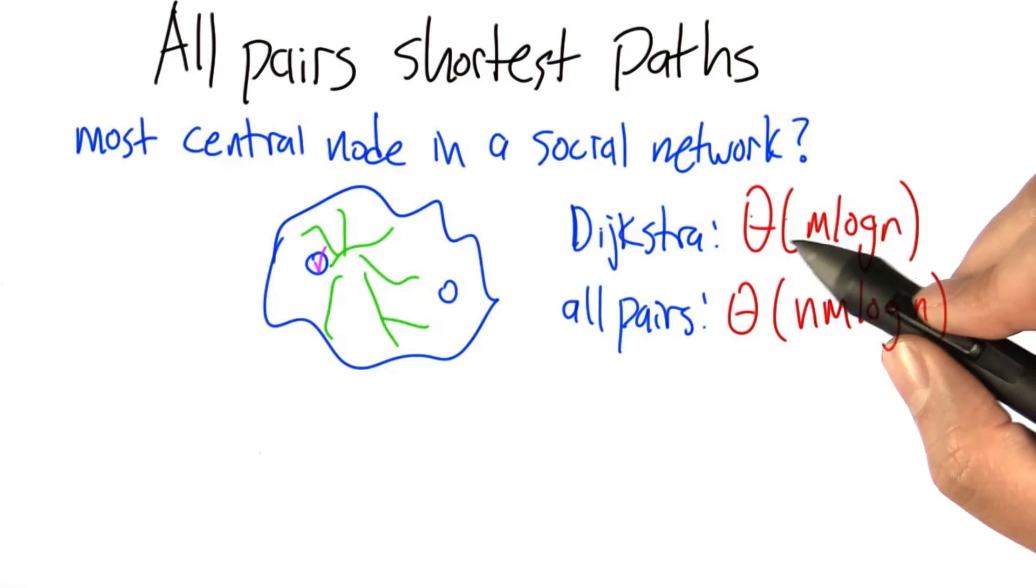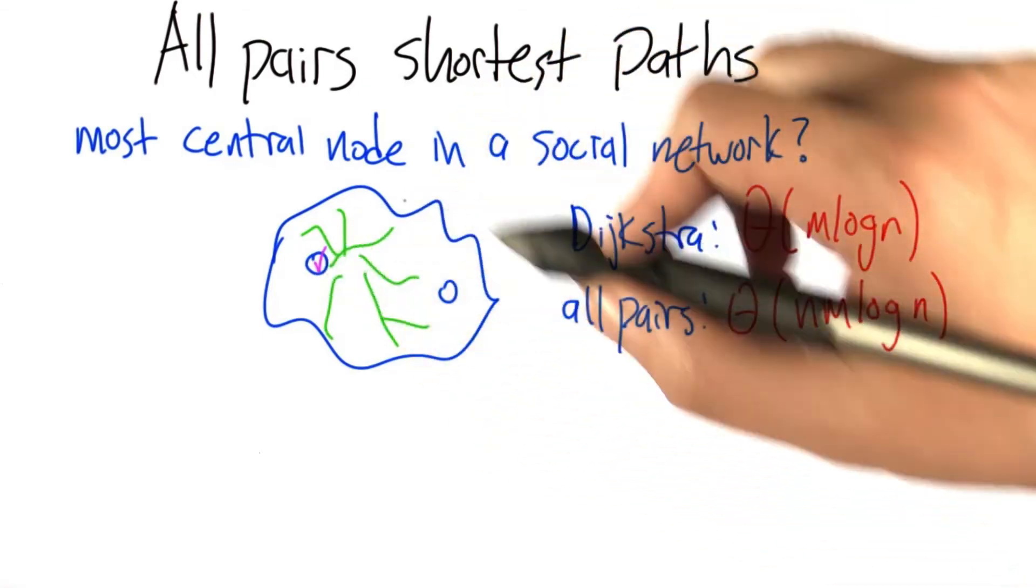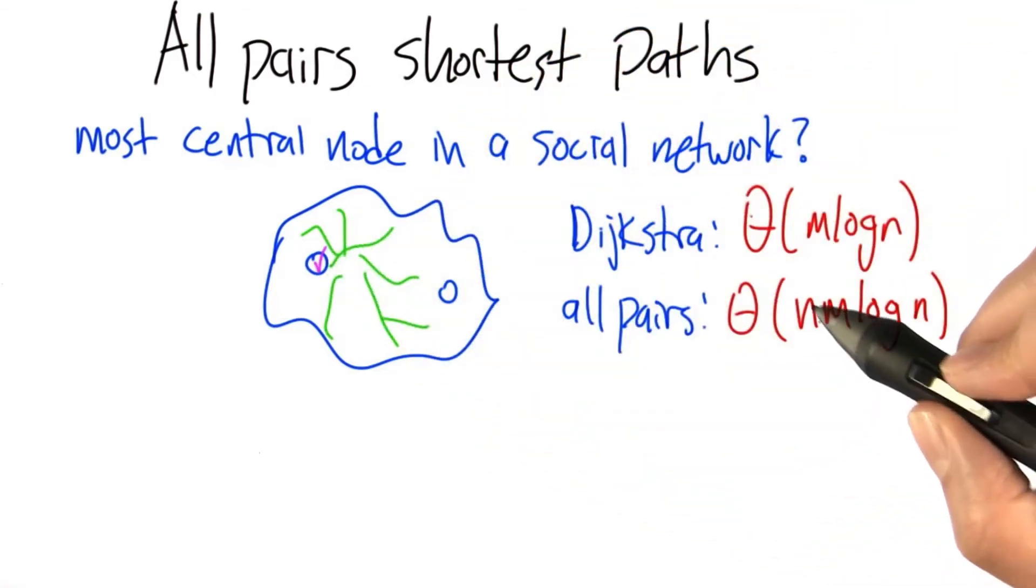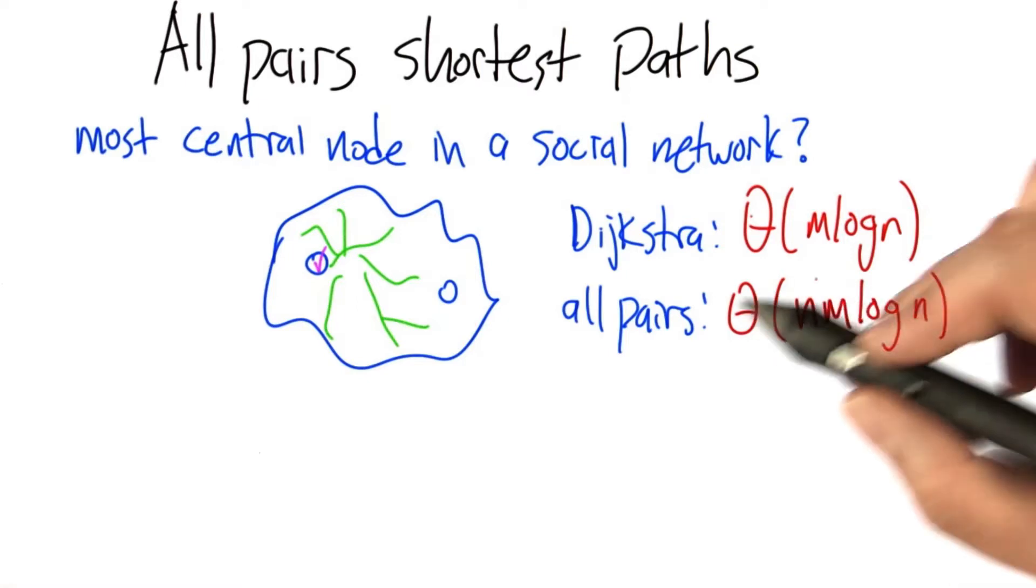Run Dijkstra. Here's a node, run Dijkstra. Here's a node, run Dijkstra. So you repeat it for all the nodes, so we get n, the number of vertices, times m log n for the total time to get the distance between all pairs of nodes.